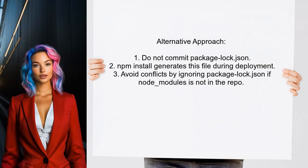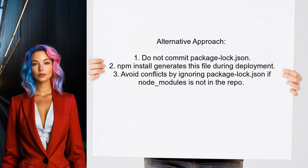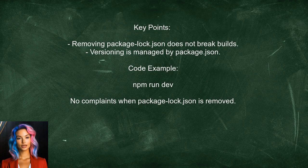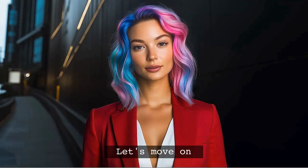Another user suggests not committing the package-lock.json file to source control. They explain that since npm install generates this file during deployment, it can lead to conflicts if changes are made on the server. They emphasize that as long as node_modules is not included in the repository, package-lock.json should be ignored. They also mention that removing it does not affect the build process, and that versioning should rely on package.json, which already contains version numbers.